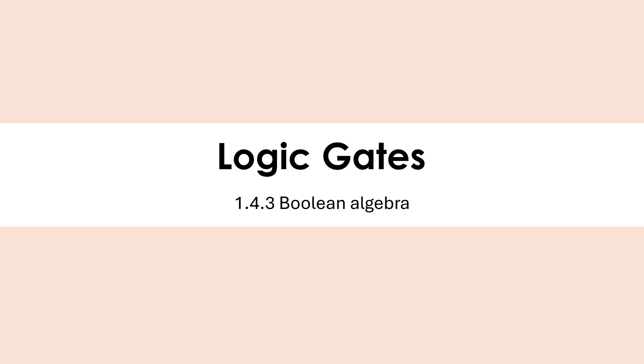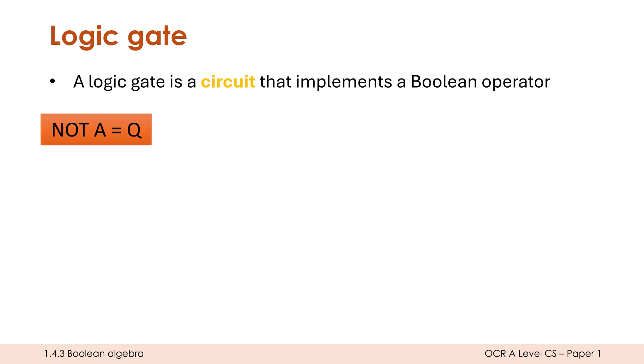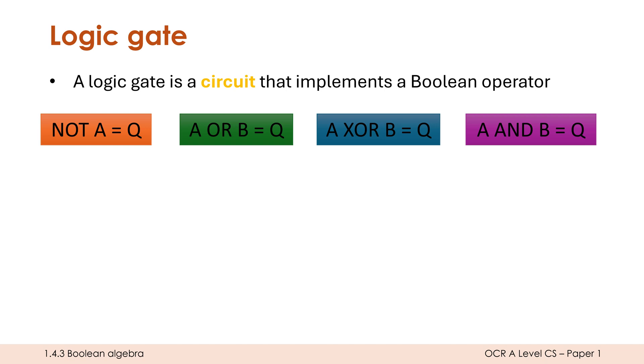Hello, we're going to be talking about logic gates in this video and going through some examples of how you might answer exam questions on logic gates. So what is a logic gate itself? Well, a logic gate is a circuit that implements a Boolean operator. A Boolean operator is used in a Boolean expression, and we looked at how they work in the last video. We've got four basic ones we're going to be learning about.